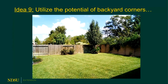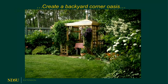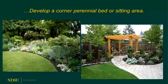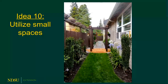Idea nine: utilize the potential of backyard corners, especially if fenced in — even if not, you can create some privacy. You could develop a little private oasis, or use those back corners to develop a new perennial garden or a seating spot. Idea ten: make use of small spaces, maybe the spot between your house and the neighbor's house. There are many columnar or pyramidal upright shrubs and small trees that go upward instead of out, and perennial flowers work well for areas like that.